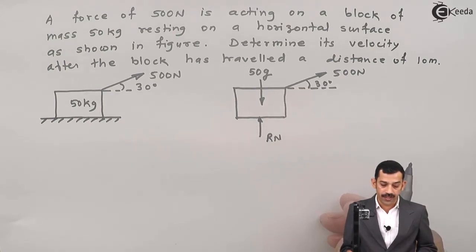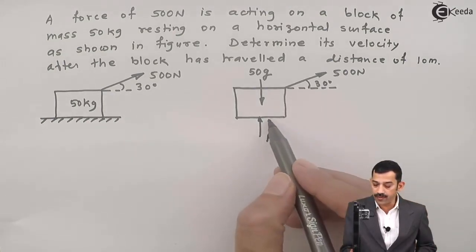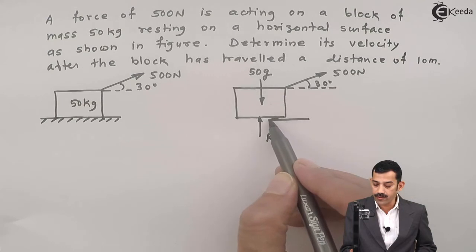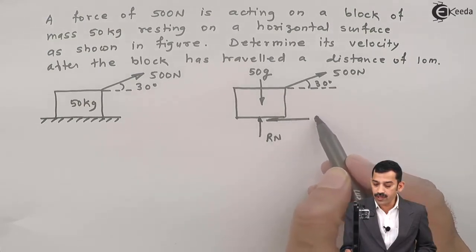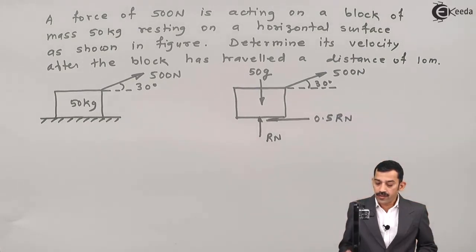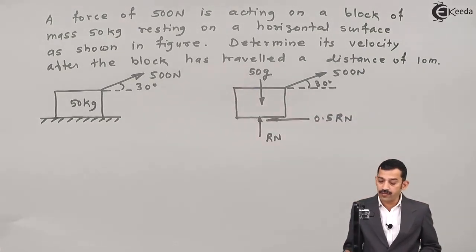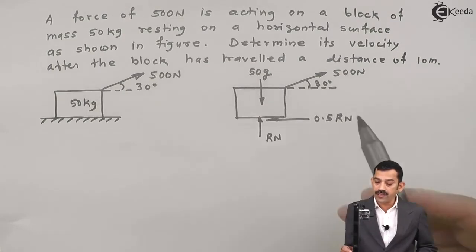The displacement is in the rightward direction, therefore frictional force will be in leftward direction. Mu is 0.5, therefore frictional force is 0.5 RN.